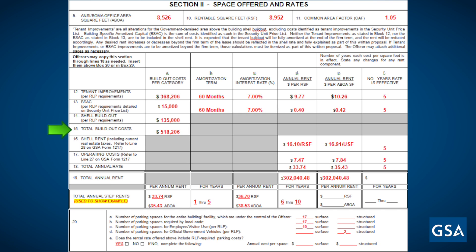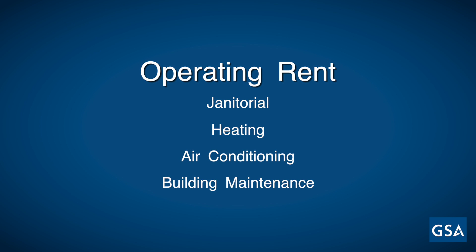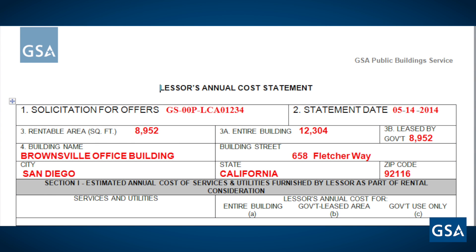The shell build-out should only include what it costs to meet the requirements in the RLP and lease. Box 15 is the total build-out cost to meet the requirements in the RLP. The example shows a total build-out of $518,206, which consists of tenant improvement costs of $368,206, basic security costs of $15,000, and shell build-out costs of $135,000. Boxes 16 and 17 are where you list the shell rent and operating rent. The shell rent would include taxes and insurance. The operating rent would include expenses such as janitorial, heating, air conditioning, and building maintenance. A total expense breakdown would be completed in the Lessor Annual Cost Statement, GSA Form 1217, which is used to derive your operating cost rate.